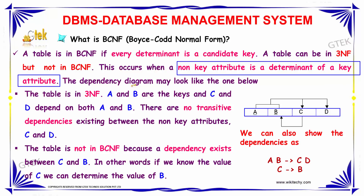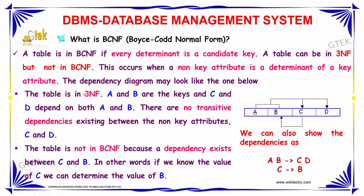This is explained in the dependency diagram given below. If a table is in third normal form, A and B are the keys, and C as well as D are dependent on both A and B. There is no transitive dependency, hence it satisfies the third normal form.